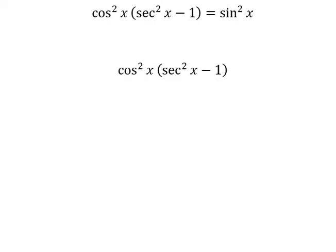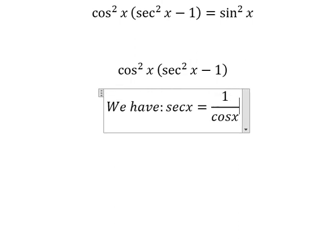We have the formula here: secant of x equals 1 over cos x. Now I will substitute this into the equation.